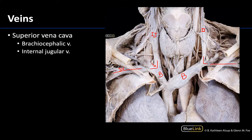You can see that the left brachiocephalic is longer than the right, but once these two veins join they form the superior vena cava. The superior vena cava is going to drain the deoxygenated blood into the right atrium of the heart. So all the other smaller veins of the anterior neck that we are about to discuss are going to drain into these larger veins.